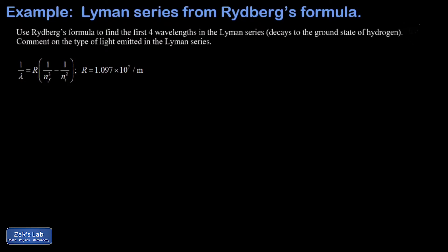The Lyman series would be decays for which this nf is equal to 1. Now we know that that's a decay to the ground state energy level, but if we treat it purely empirically, what we're looking at is a transition from n equals 2 to n equals 1, and then we'll look at n equals 3 to 1, 4 to 1, 5 to 1, and we'll have our first four wavelengths in the Lyman series.